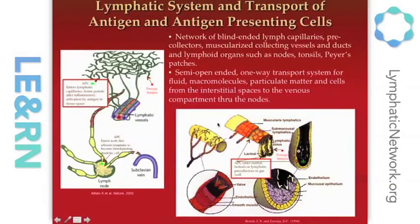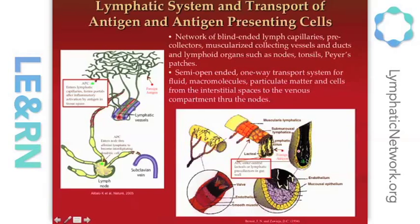Foreign antigens are typically taken up into lymphatic capillaries and can be carried naked or attached to an antigen-presenting cell that enters the lymphatic vascular space and traffics through this whole network to get to the node to activate immune responses. That can happen in the skin lymphatic tissue as well as the GI lymphatic tissue that we understand better and investigate more in my lab.